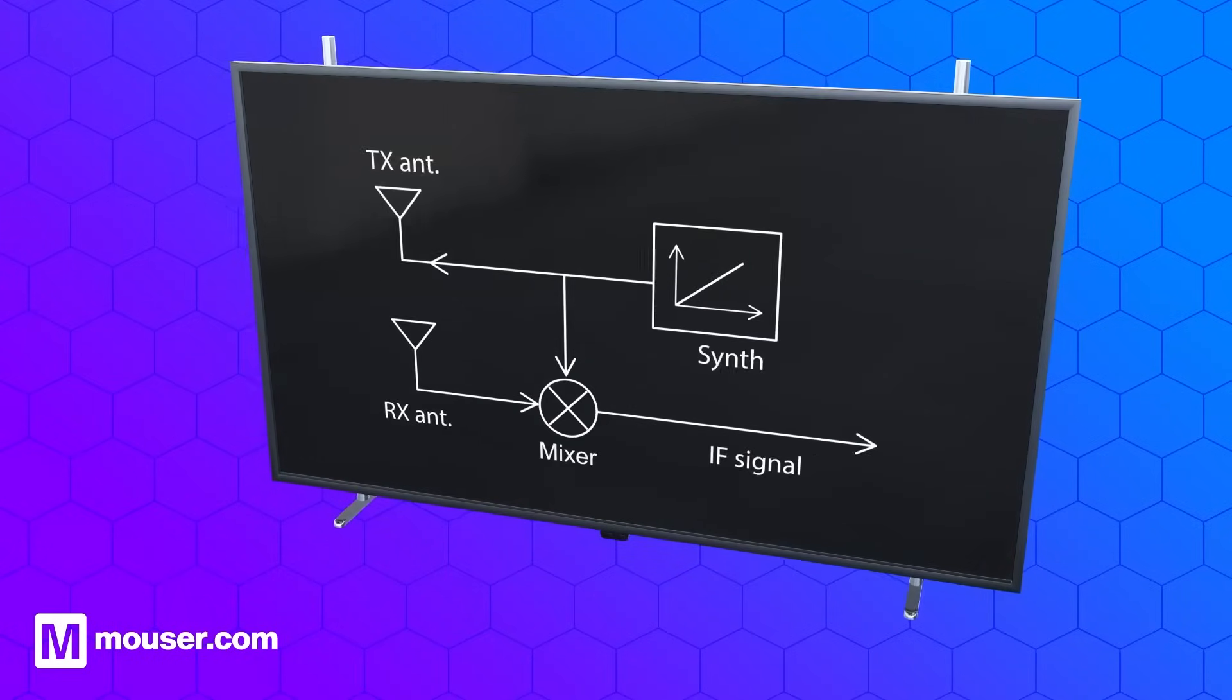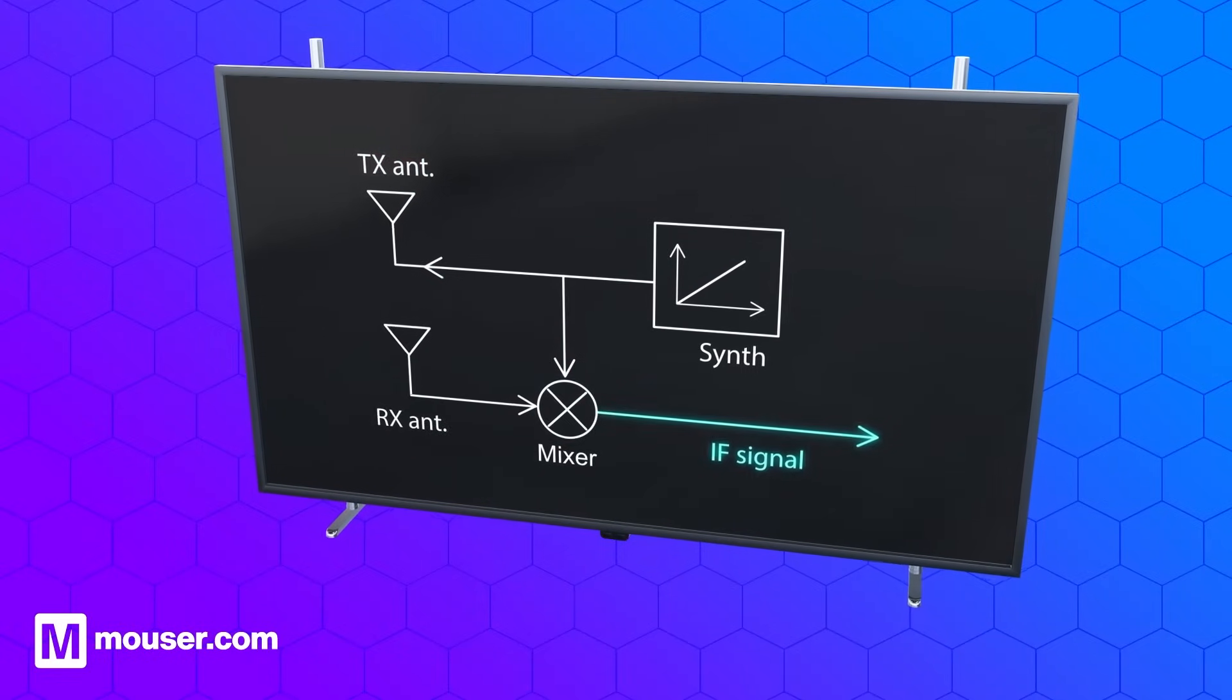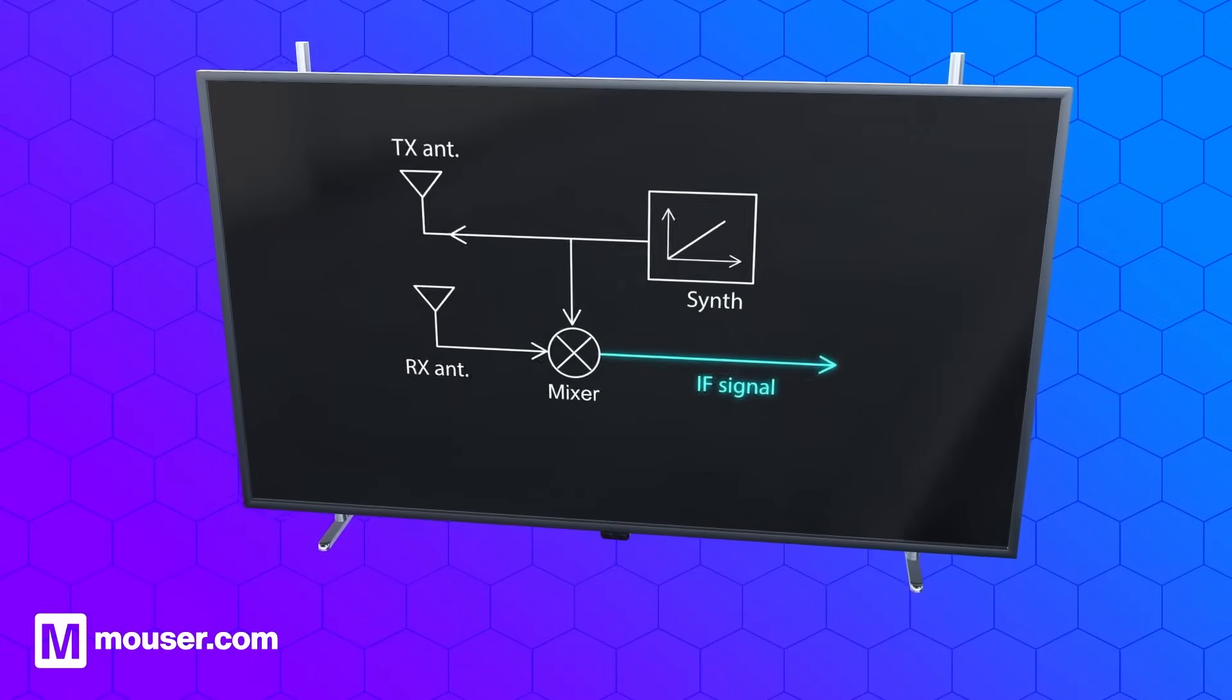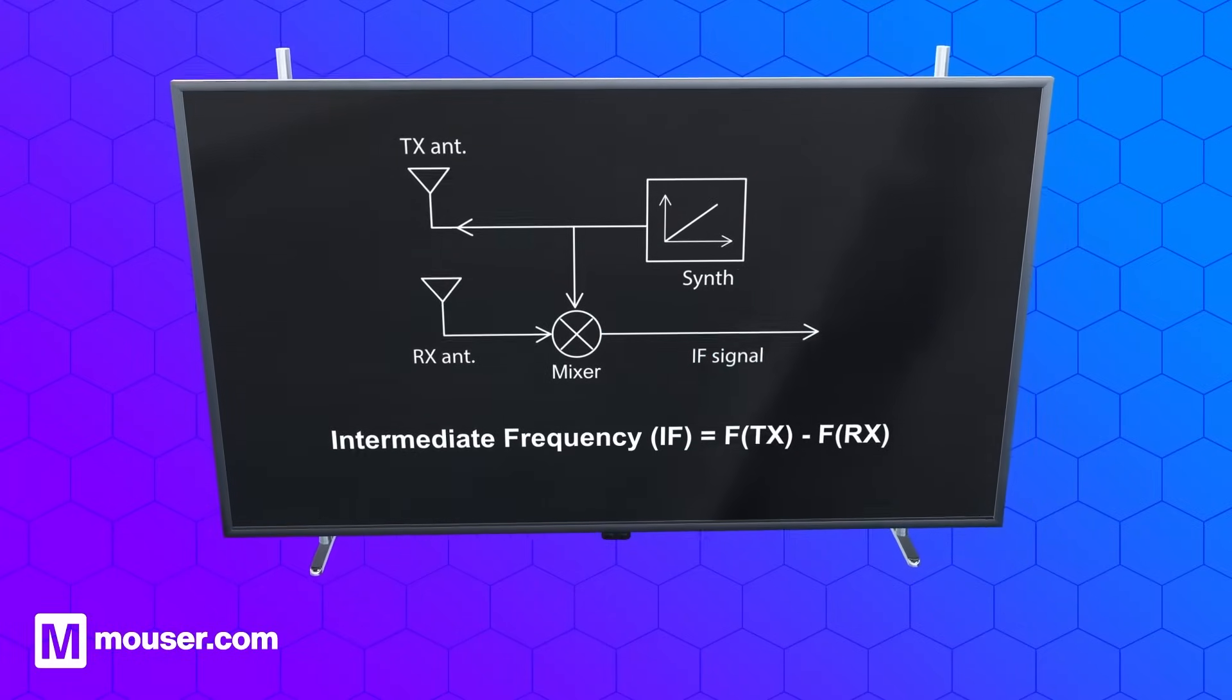If a reflected chirp is received, it's mixed with the transmitted signal to produce an intermediate frequency (IF), from which distance and speed can be calculated by the integrated signal processing.